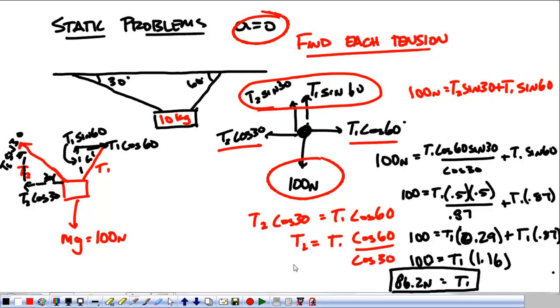86.2 newtons. And we can plug that in over here to get T2. So, 86.2 newtons times cosine of 60, divided by cosine of 30, gives me T2 as 49.7 newtons.